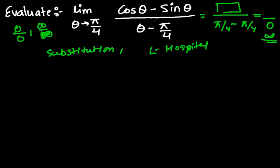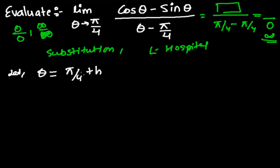We'll be using the substitution method. Let me substitute theta equals to pi by 4 plus h. I'm substituting this because when I place pi by 4 in the denominator, the pi by 4 terms will cancel and I will get only h. By solving, I can cancel out h or get some standard form, and then I can place the value.